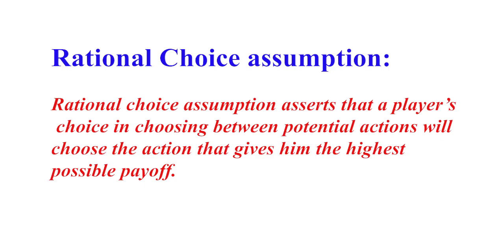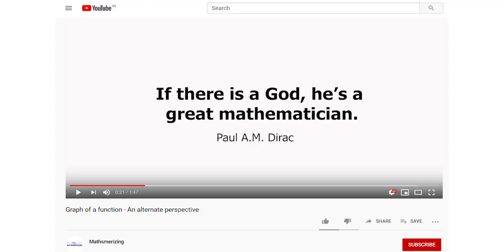Now before moving forward, let us examine some assumptions in game theory. The first assumption that we have is the rational choice assumption. The rational choice assumption asserts that a player's choice in choosing between potential actions will be the action that gives him the highest possible payoffs. So the rational choice assumption in case of matching pennies imposes the condition that both players know all the possible actions, all possible outcomes and the possible payoffs from each outcome.